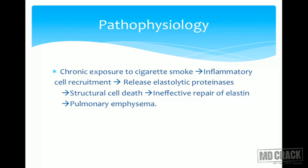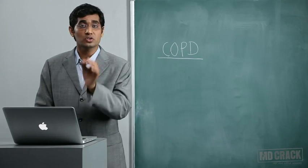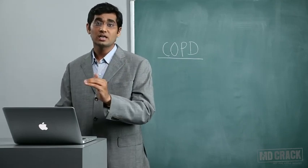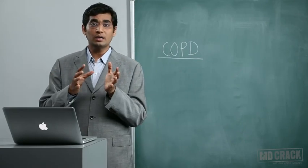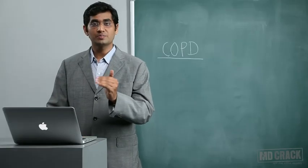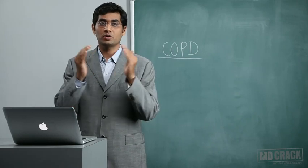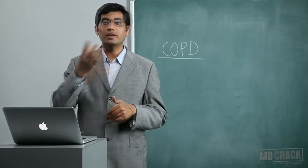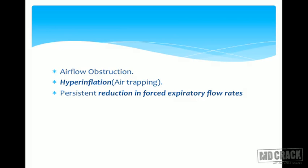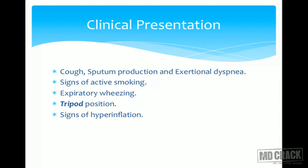Regarding pathophysiology: chronic exposure to cigarette smoking leads to inflammatory changes in the airway, recruiting inflammatory cells that release elastolytic proteinases. This causes structural cell death, ineffective repair of elastin, and pulmonary emphysema. The elastinase and proteinase enzymes destroy tissue around the alveoli, and due to ineffective repair, pulmonary emphysema forms. This leads to airflow obstruction and hyperinflation — air trapping in the lung. In COPD, there is a persistent reduction in forced expiratory flow rates.